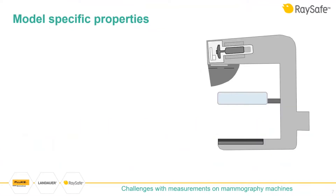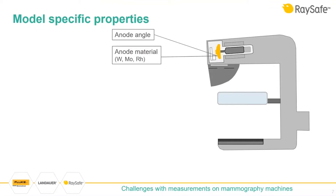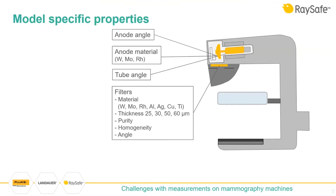There are different types of challenges, and some are model-specific. You have anode angles that can vary between machines, different anode materials and purities, and tubes mounted at different angles. Then we come to filters — the filter can have different materials, different thickness, different purity, and different homogeneity.